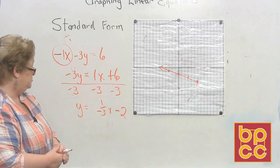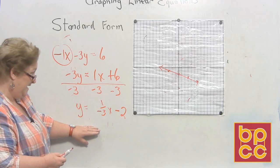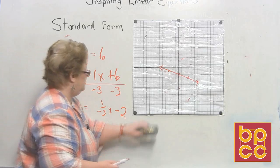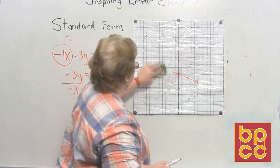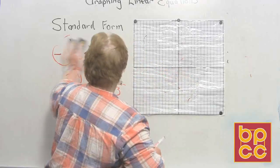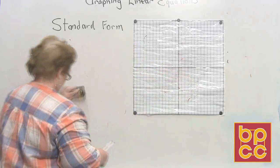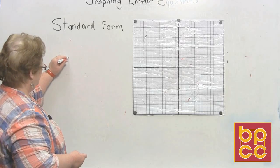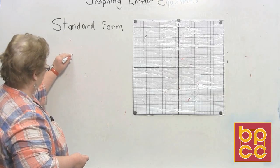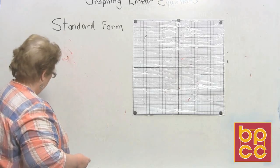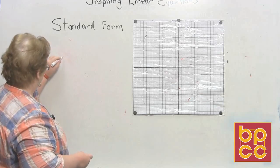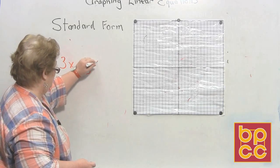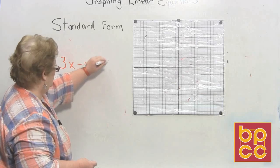So this is a picture of y = -1/3x - 2. Let's try one more. This time I'll say 3x - y = 9.